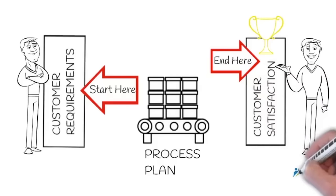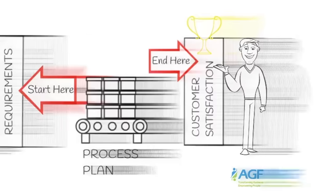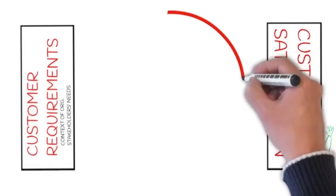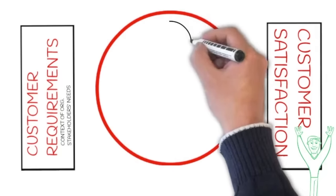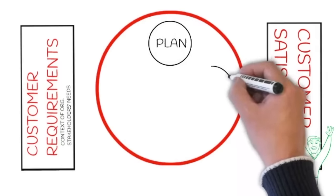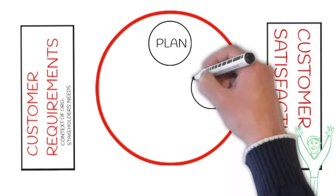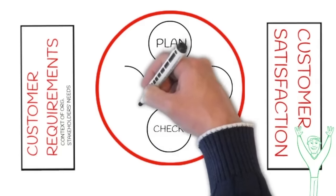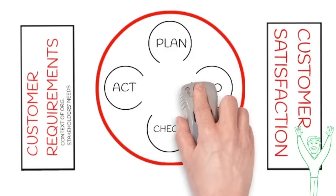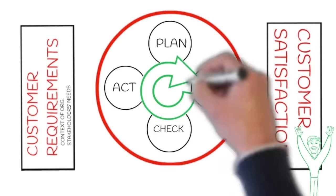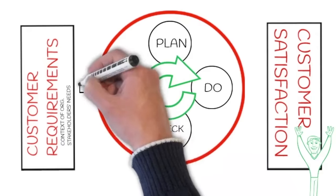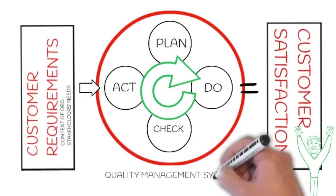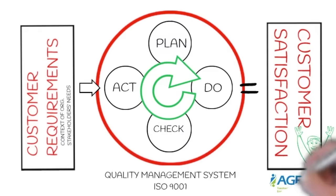The left side tells us what the requirements are and the right side shows us the desired end results. Now the only way for us to bridge the wide gap between customer requirements and customer satisfaction is a robust and reliable system that should be established right in the middle of this canvas. This is where the quality management system comes in place. The only way for you to ensure consistent quality results is by establishing this quality management system in the middle of your business operations.